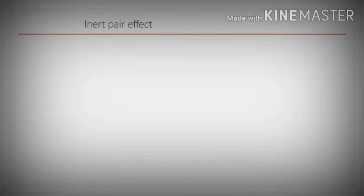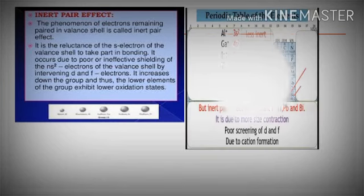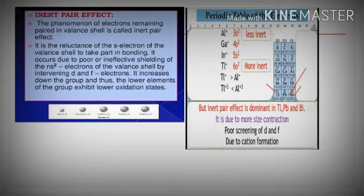When the S electrons of heavier atoms do not take part in bond formation, it is called inert pair effect. It is shown by those elements whose valency shell is 4 or greater than 4. This inert pair effect can be seen in P-block elements.